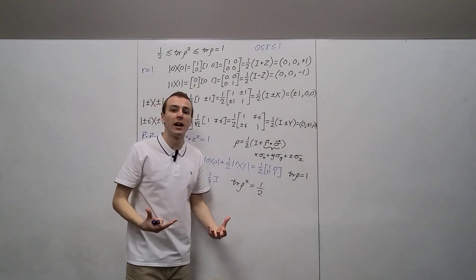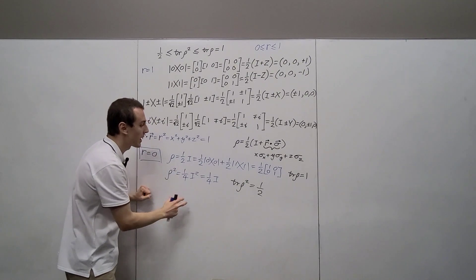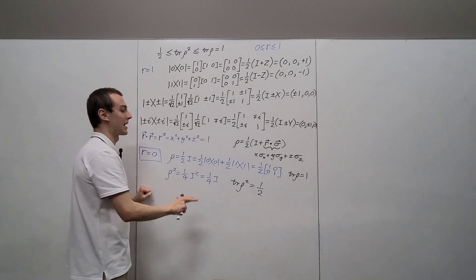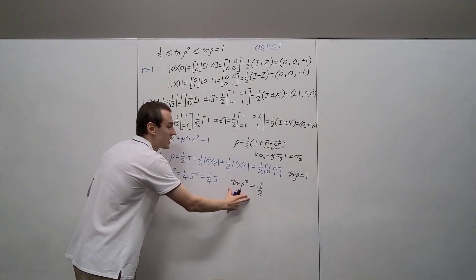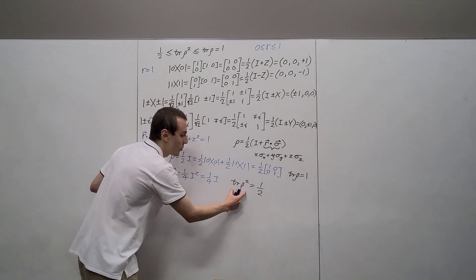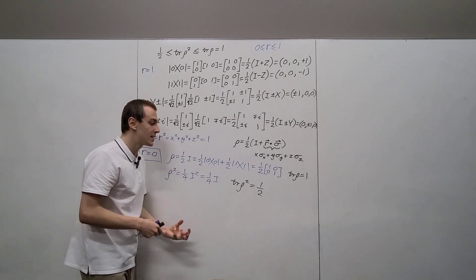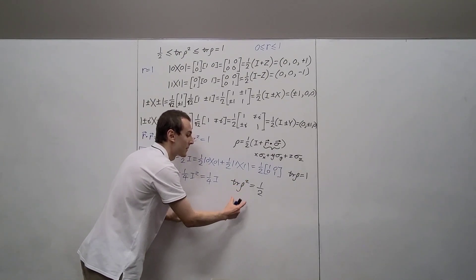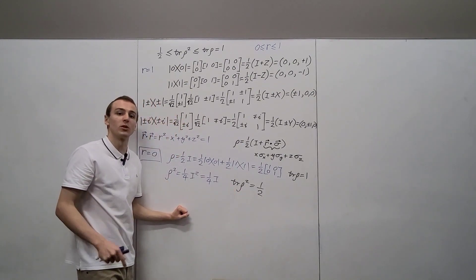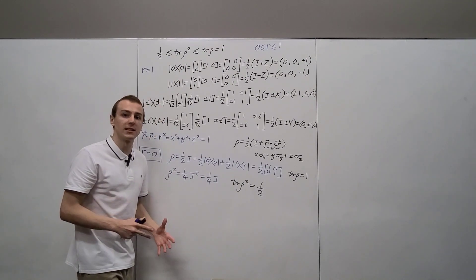The Bloch sphere turns qubit states into a picture we can reason with. The most important quantity for classifying pure versus mixed states is the purity — the trace of rho squared. If purity equals one, you're dealing with a pure state; if it's less than one, you're dealing with a mixed state.